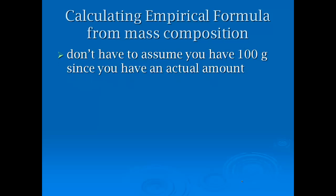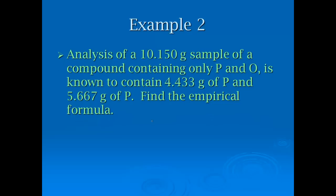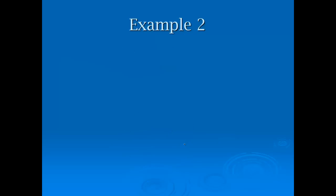We also can get it from mass composition. We don't have to assume we have 100 grams if they give us an actual amount in grams. There's a mistake here on this next slide. The steps are all the exact same way. We go grams to moles, divide by the smallest, find the ratio. If I have 10.150 grams sample of a compound containing only phosphorus and oxygen, 4.433 grams of those are phosphorus. If I know the rest has to be oxygen, I take 10.150 and subtract 4.433, I end up with 5.717 grams of oxygen.